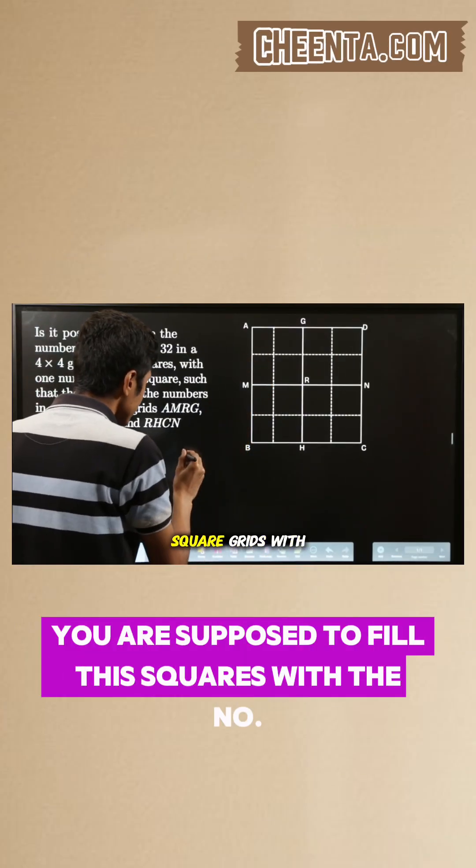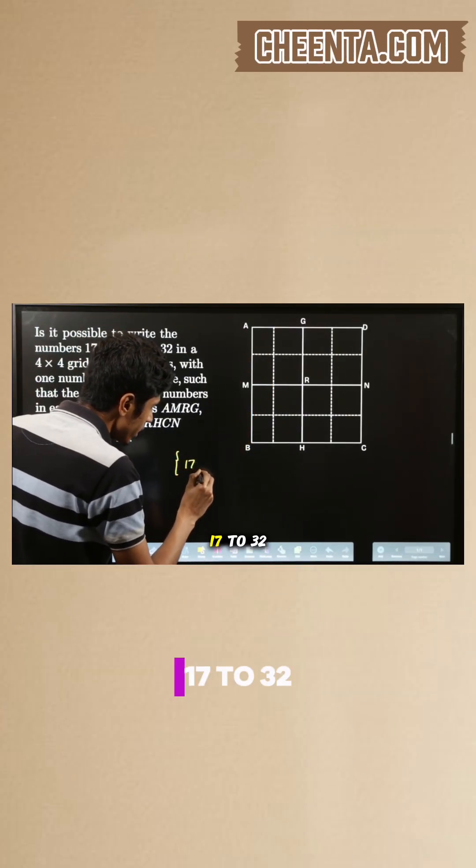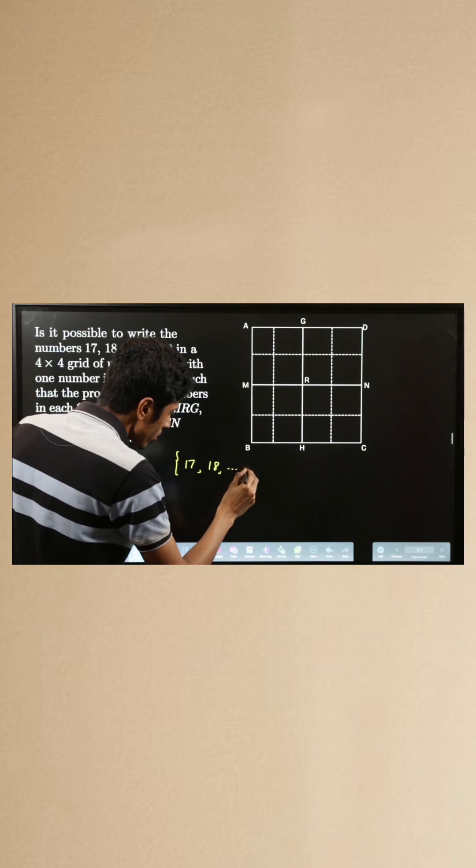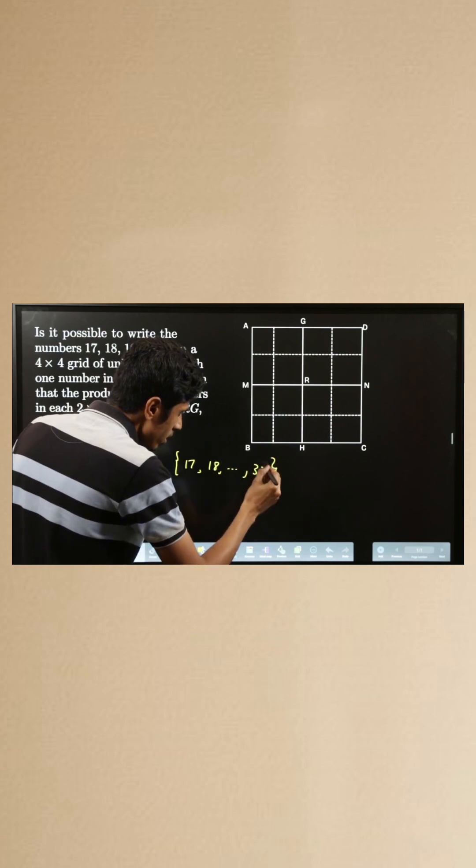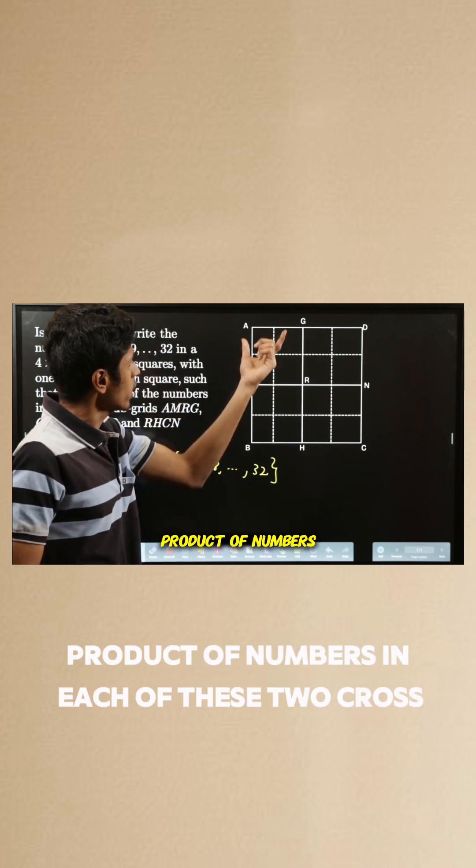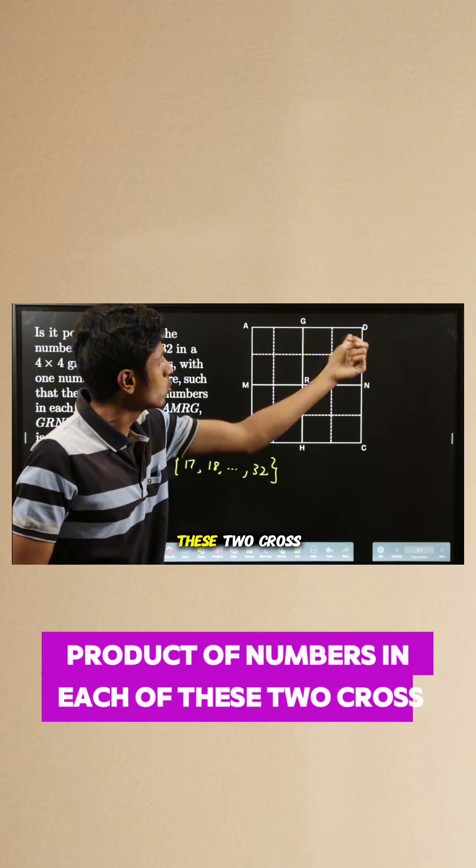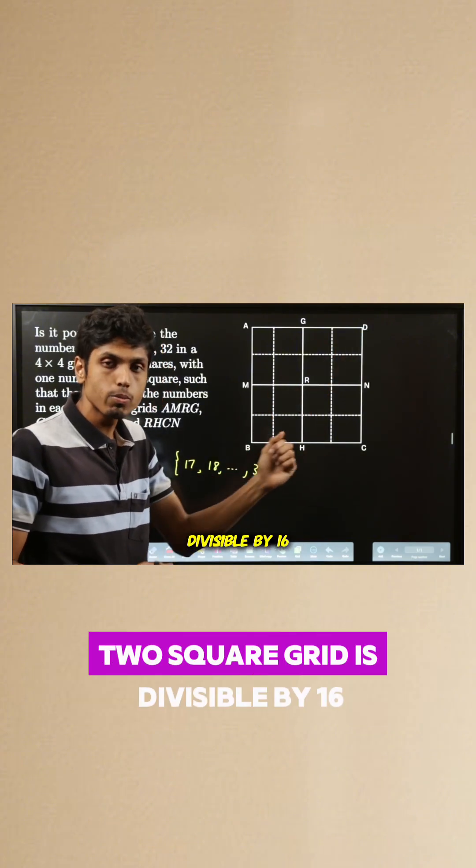You are supposed to fill these square grids with the numbers 17 to 32 in such a way that the product of numbers in each of these 2 x 2 square grids is divisible by 16.